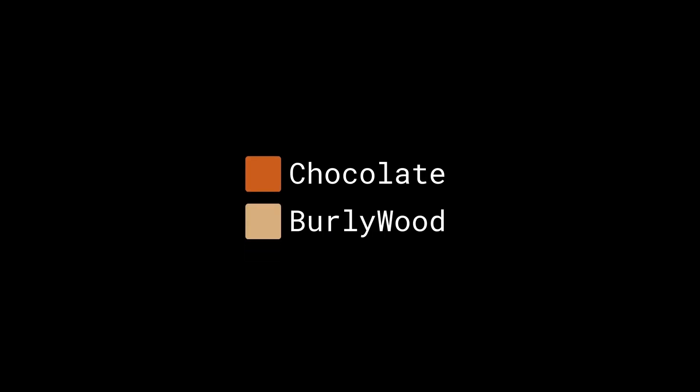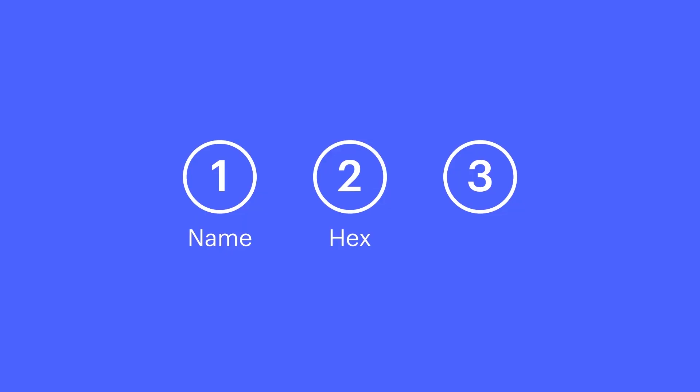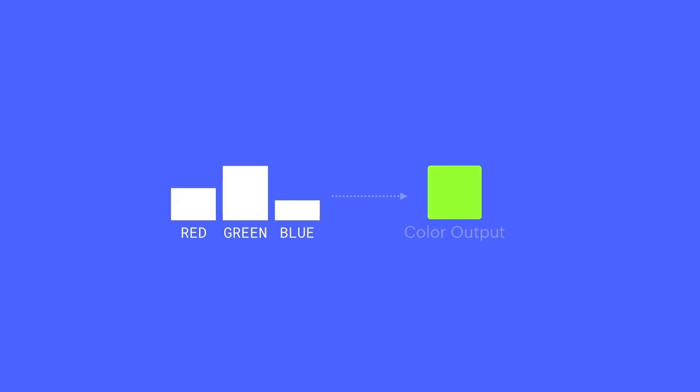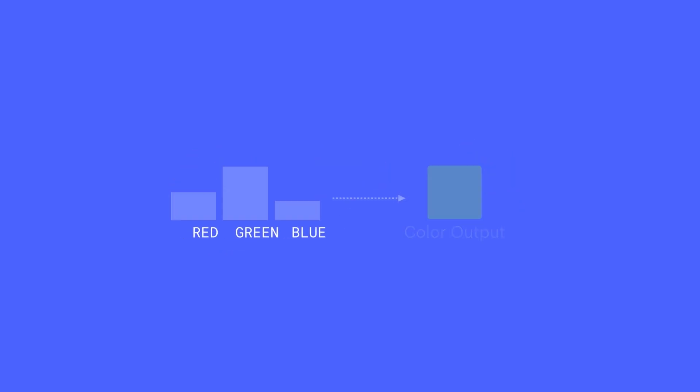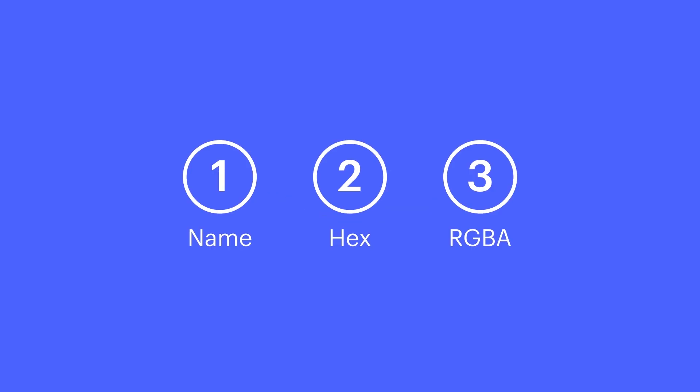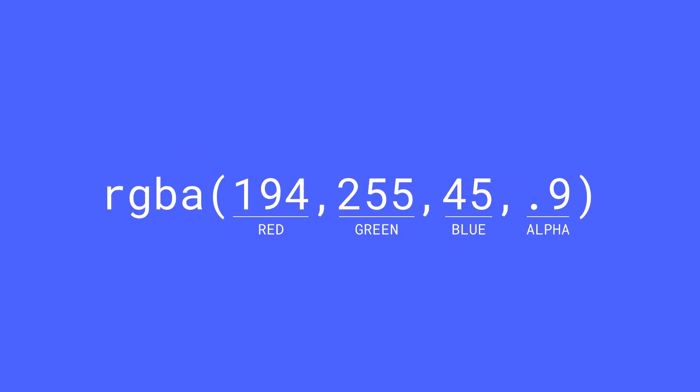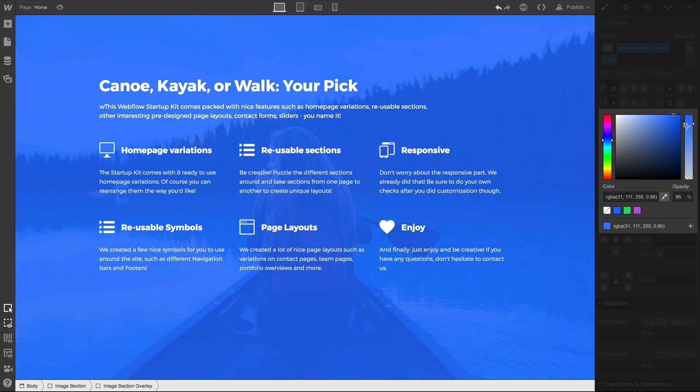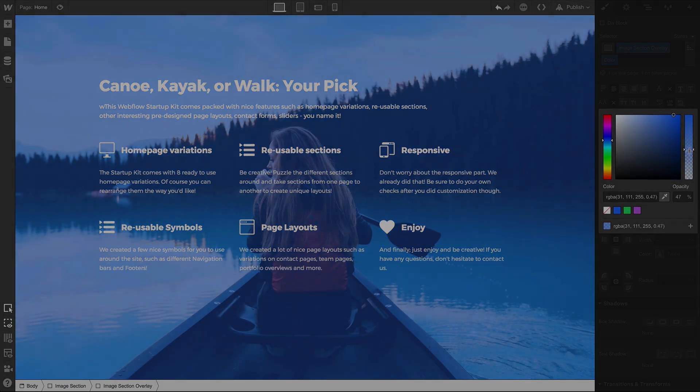So, we have color names for some of our more specific colors like chocolate and burly wood. We have hex codes, or hex triplets, which let us specify red, green, and blue values hexadecimally. And RGBA gives us numerical control over each color and the ability to adjust opacity.